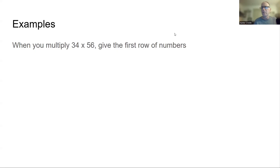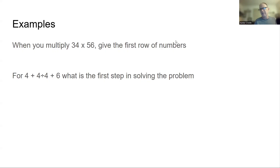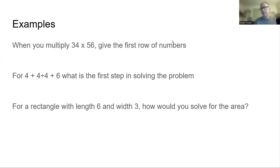During COVID this was very useful because you can't see if they're cheating remotely. For an order of operations problem like four plus four divided by four plus six, I ask: what is the first step in solving the problem? You can do this by multiple choice - options like four plus four, four divided by four, four plus six, or it doesn't matter.